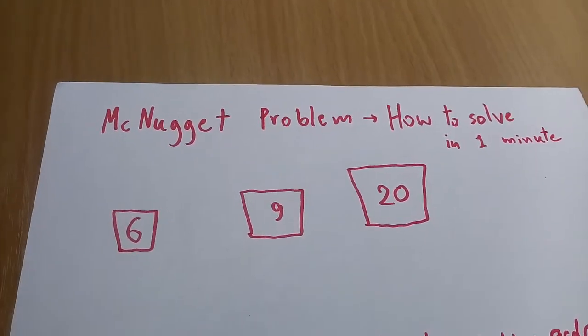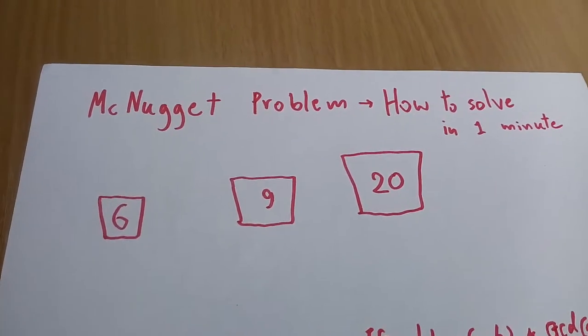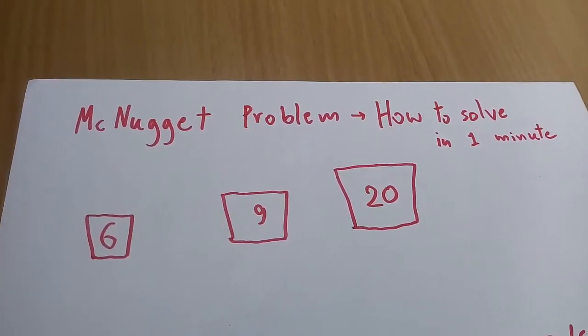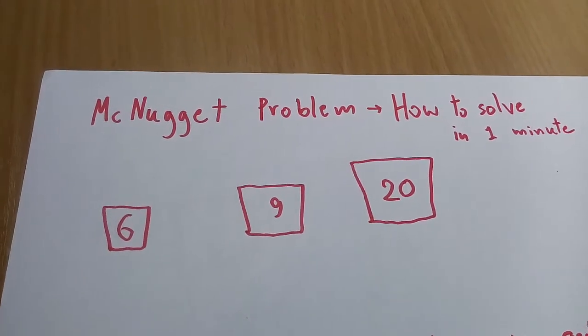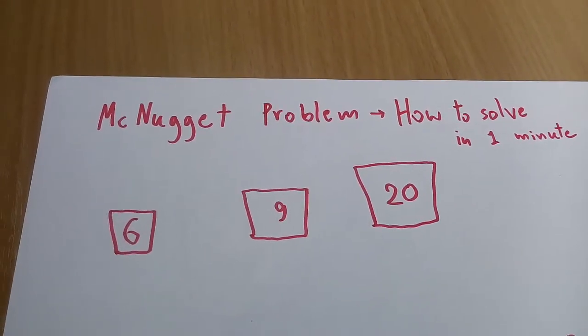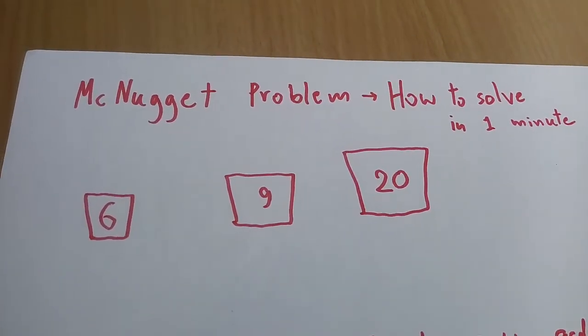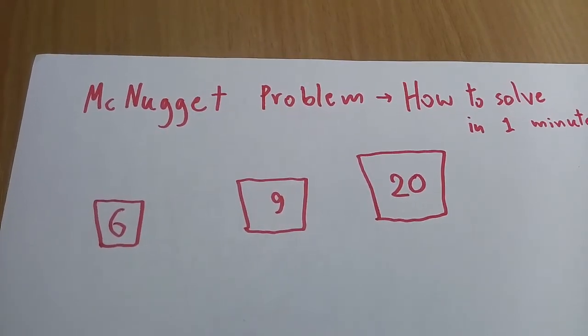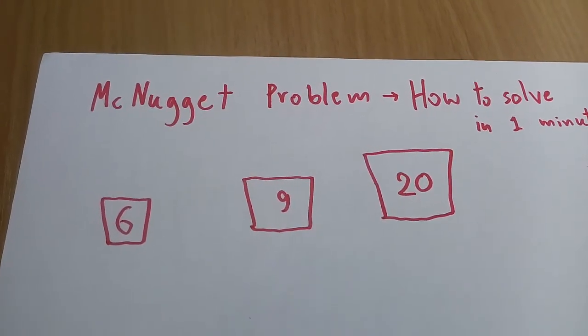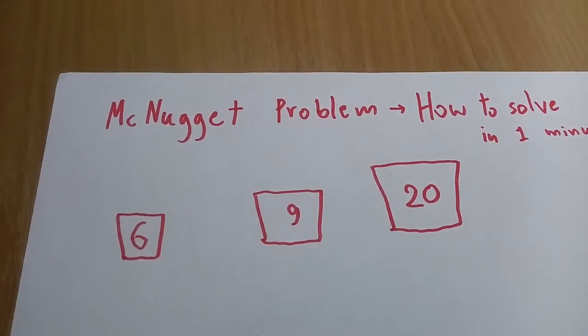Hi guys, this is the video for how to solve the McNugget problem within one minute. Let's start with what the McNugget number is. In the past we have three different boxes for McNuggets: six nuggets in a small box, nine nuggets in a middle box, and twenty nuggets in the big box.